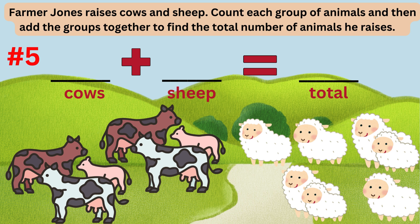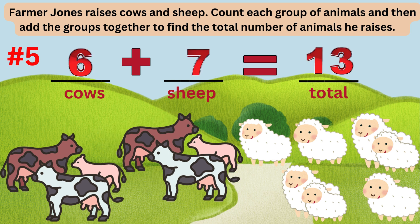Word problem number five: Farmer Joan raises cows and sheep. Count each group of animals, then add the groups together to find the total number of animals he raises. After counting, there are six cows and seven sheep, so Farmer Jones has a total of 13 animals. The number sentence is 6 plus 7 equals 13.